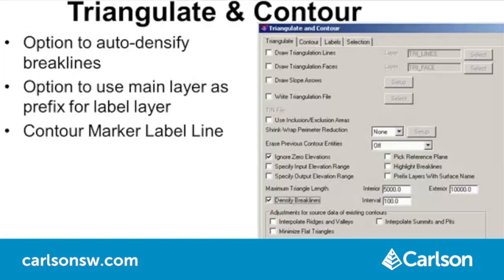In Triangulate and Contour, there's a new feature to autodensify breakline polylines. There's a new option to use the contour layer name as the prefix for the contour label. Also, there's a new command to tag lines in the drawing as contour marker lines that Triangulate and Contour uses to place the contour labels where the contour lines intersect the marker lines, providing a way to control the contour label placement.